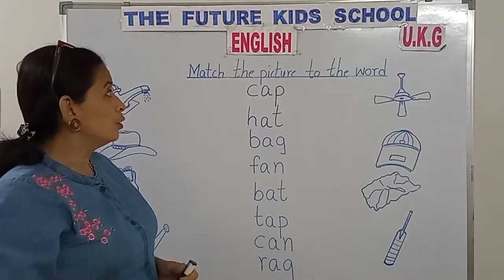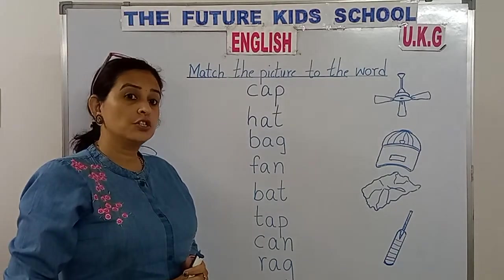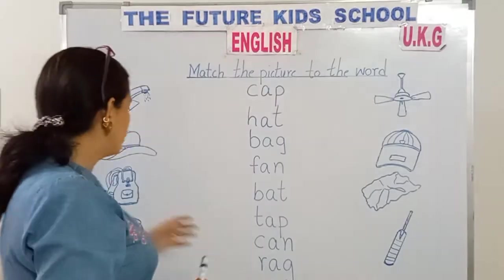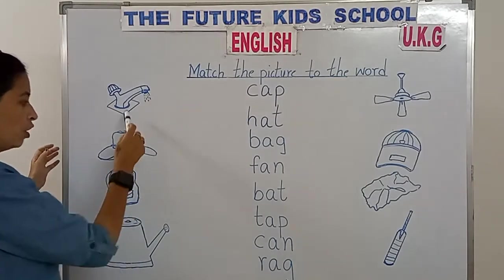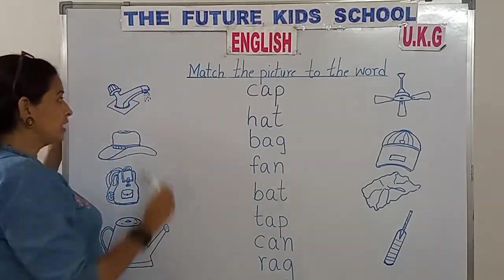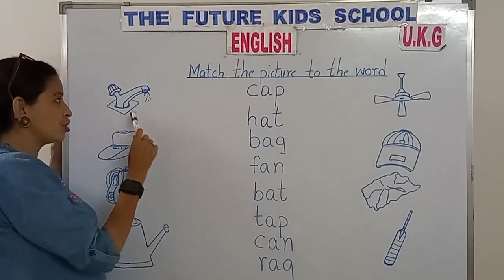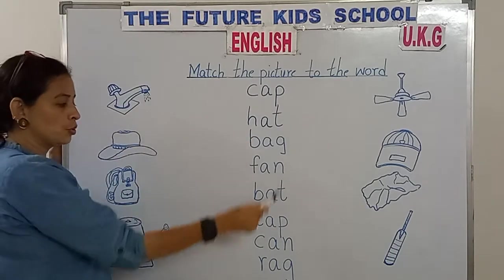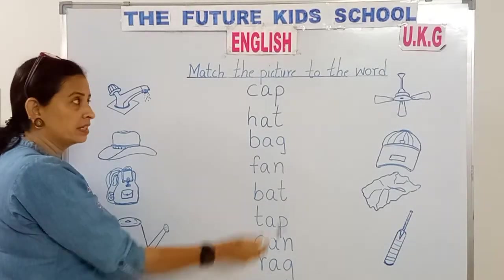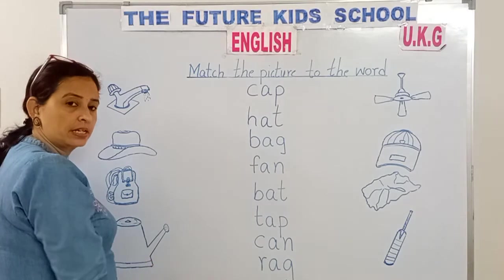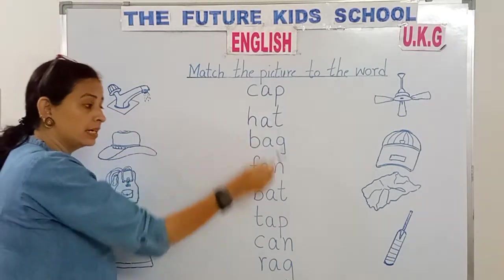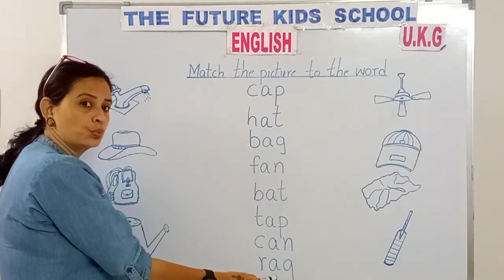Let's do match the picture to the word. We've got pictures over here children on this side and on that side. So we need to match each picture to the correct word. There are many words over here children, but we need to match the picture to the correct word.